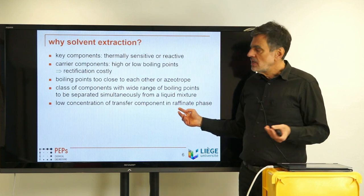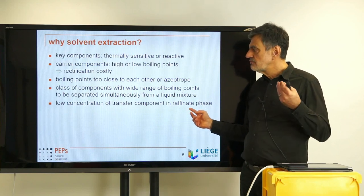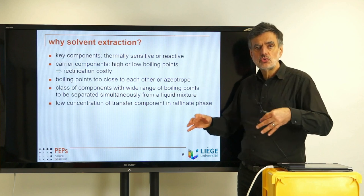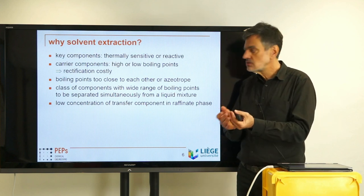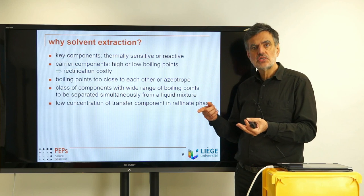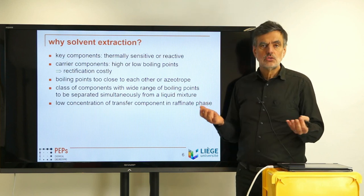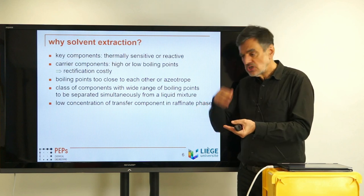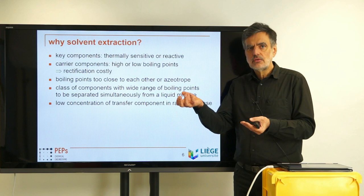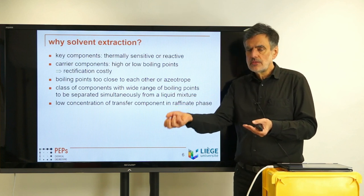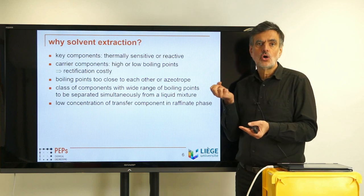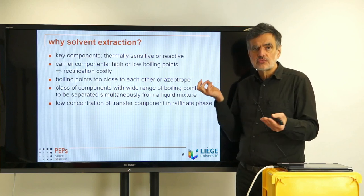The last point mentioned here: if you have a low concentration of your transfer component in the raffinate phase, distillation would require evaporating a large fraction of the entire feed — including most of the primary solvent — just to build up the counter-current flow in the distillation column. It is much more efficient to add a small flow rate of an optimal extractant, because with high enough selectivity you can pull the transfer component into the extractant phase with a relatively low flow rate. In that case, extraction is quite beneficial.